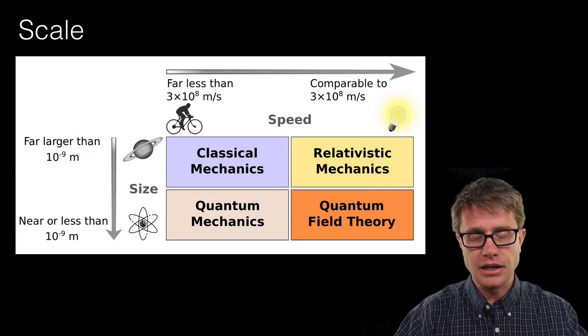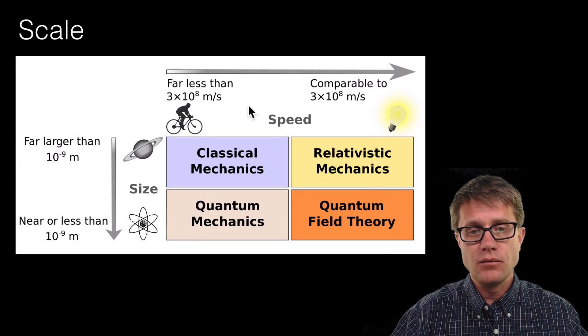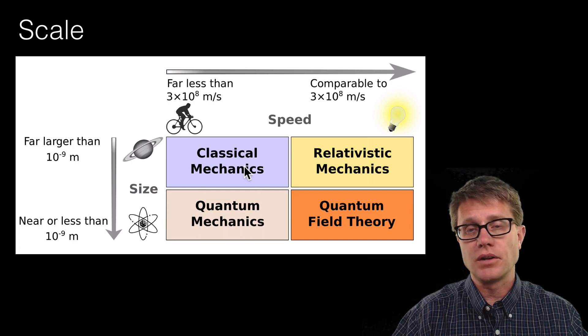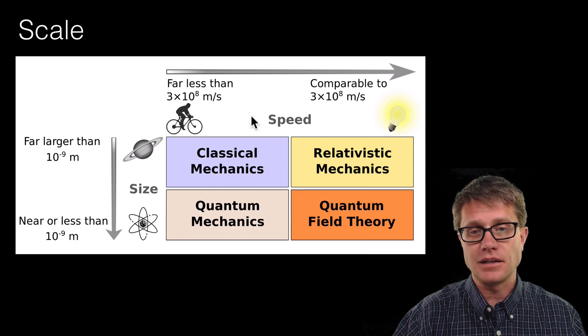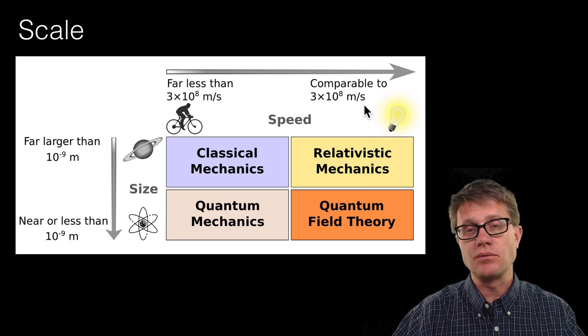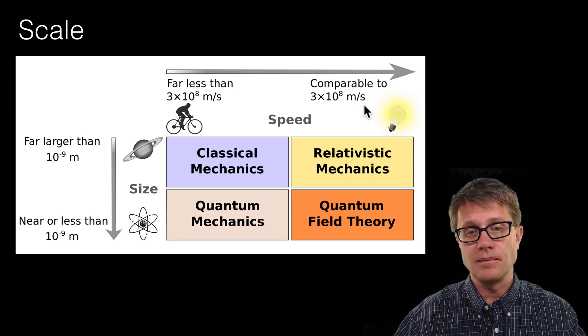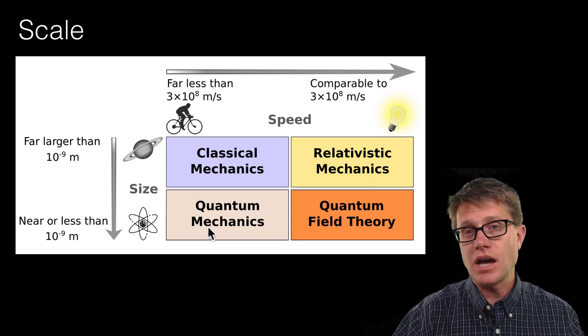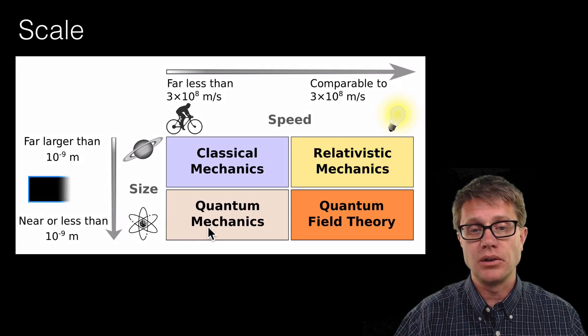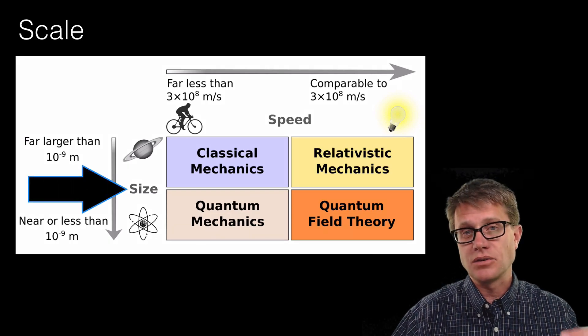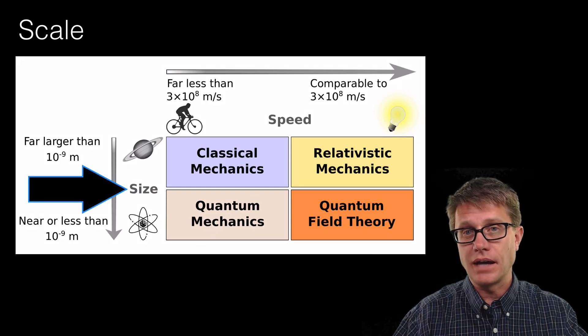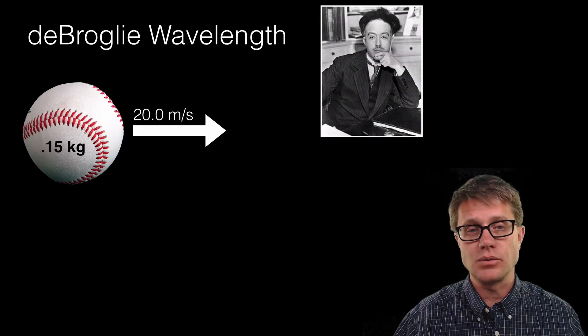And so to set the scale, we have talked about this before, we live in the level of classical physics, classical mechanics. As we increase our speed then we move into the area of relativity. As we decrease our size then we move into the level of quantum mechanics. And so size, what size we are at, determines which of these mechanics we are going to use.